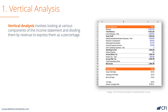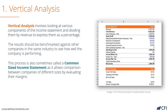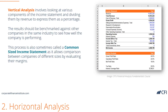In vertical analysis, an analyst will take each line item on the income statement and divide it by revenue to see it as a percentage. This enables the analyst to compare the company to other companies in the same industry, which is why it's also called a common sized income statement. This is a very good first step in comparing companies.